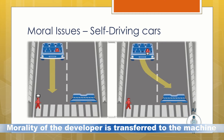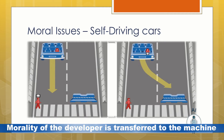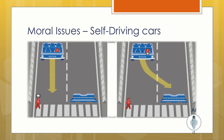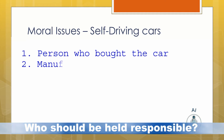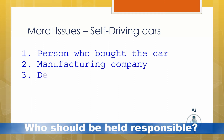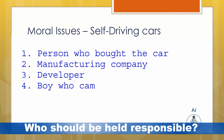Here the morality of the developer gets transferred into the machine, as what according to him or her is right would have priority, and hence the selection would be made by the machine. Let's assume that the car has hit the boy who came in front of it. Now who should be held responsible — the person who bought the car, the manufacturing company, the developer who developed the algorithm, or the boy who got injured?